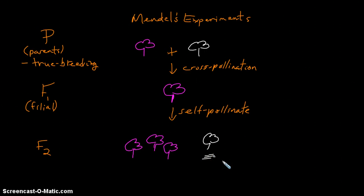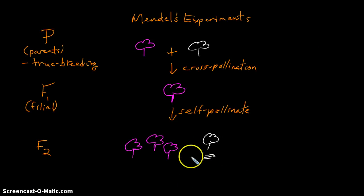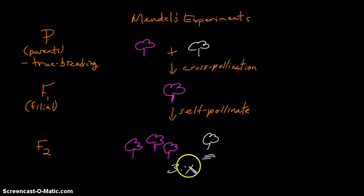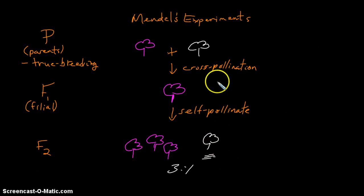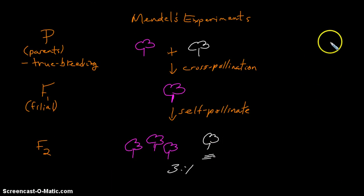We can look at this 3 to 1 ratio that was exhibited in the F1 generation and explain the disappearance and reappearance of traits using our familiarity with Punnett squares. For instance, if we set up a Punnett square for this first cross...